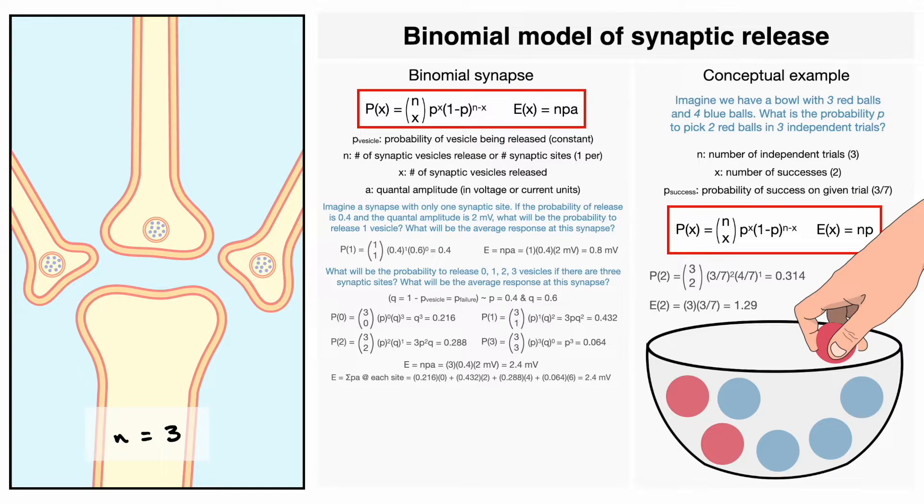Now, the case with multiple synaptic sites can be a bit tricky to understand what is going on, and to help ourselves, we can refer to a graph to have a better intuitive idea. On this graph, we will plot the probability for each scenario as a function of the quantal amplitude. So for x equals 2 for example, we have a probability of 0.288, and it is associated with a quantal amplitude of 4.